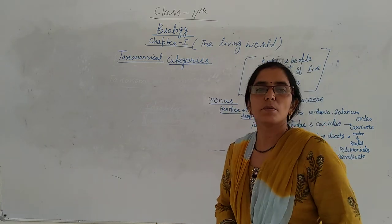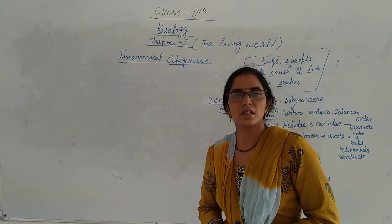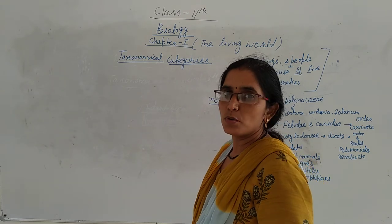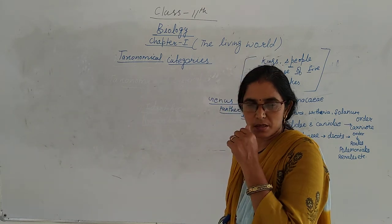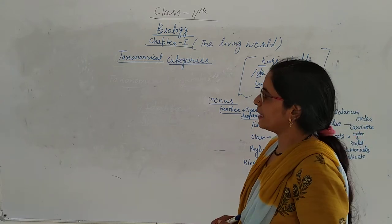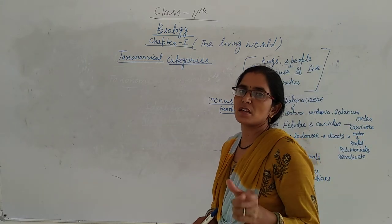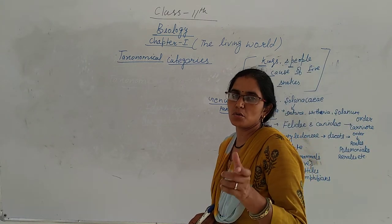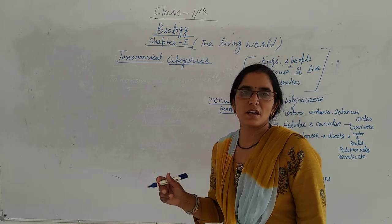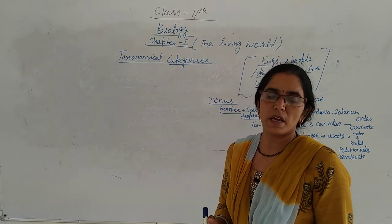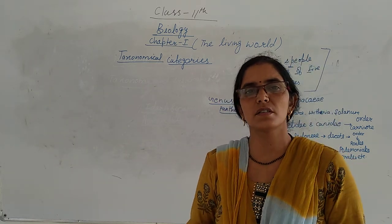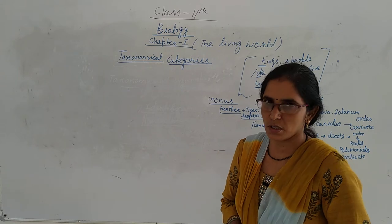In the second video, we discussed taxonomy and systematics. I hope you have reviewed taxonomy and systematics. We discussed about identification, classification and nomenclature. In systematics, we discussed the branch of biology in which we study about the evolutionary relationship between organisms.